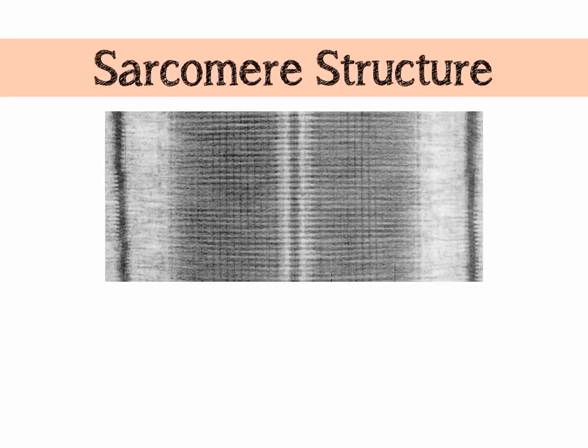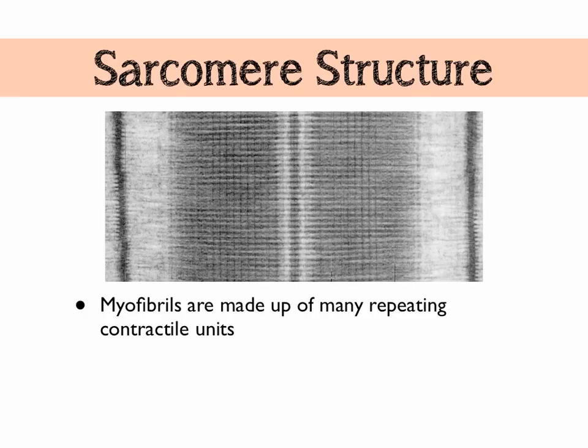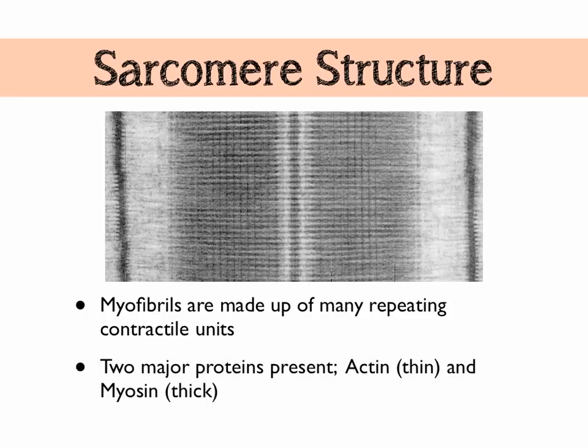Here is a microscope image of a sarcomere. A sarcomere is one contractile unit that makes up a myofibril. Myofibrils are made up of many repeating contractile units called sarcomeres. In these we can see two types of fiber: a thick fiber which is the dark color, and a thin fiber. Actin is the thin protein fiber and myosin is the thick one. A way to remember this is that actin is a shorter word and therefore thinner, or you can think that actin is thin, which kind of rhymes.